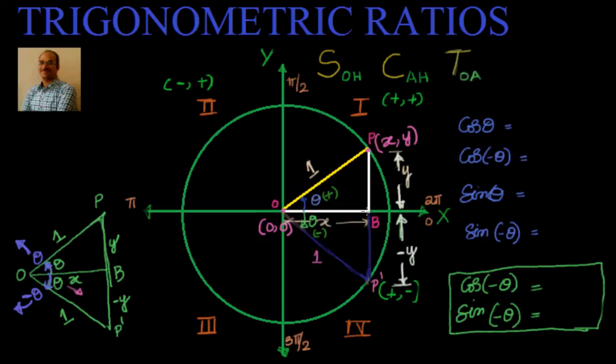So from the positive direction of x axis we have taken earlier theta. Now I will take in clockwise direction the same angle theta and I will see how the cos theta, sin theta values are changing with respect to cos of minus theta and sin of minus theta. So let us go ahead and do that.